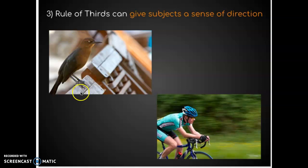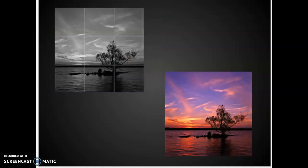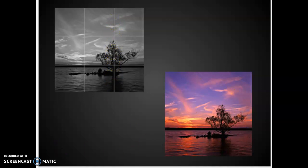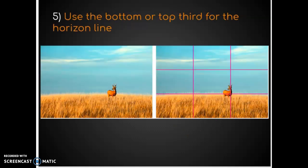Notice this bird is on the intersection points over here to the left, and he's looking to the right — that's correct. It would look weird if he were positioned on the right points while looking to the right. Same with the biker. We call this negative space — play with it and use it to guide your viewer's eye around the composition. Here you can see the photographer lined up the horizon line where the sky meets the land and the tree to make an interesting composition. Aligning these points and your subject matter can give energy, interest, and movement to your composition.